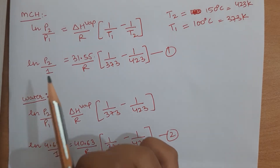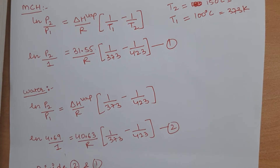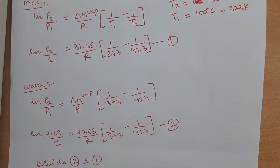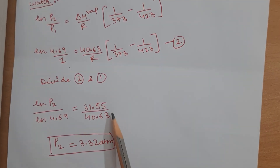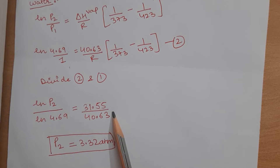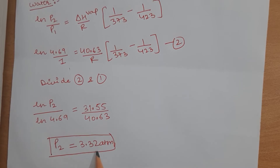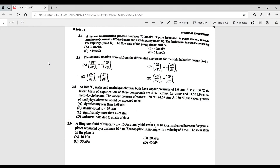Substituting the values into the Clausius-Clapeyron equation for both compounds and dividing the two equations, we can solve for the vapor pressure of methyl cyclohexane at 150°C, which is 3.32 atm. This value is significantly less than 4.69 atm, so option A is correct.